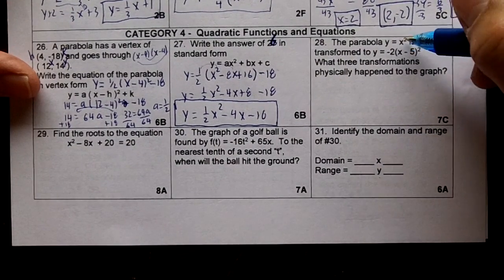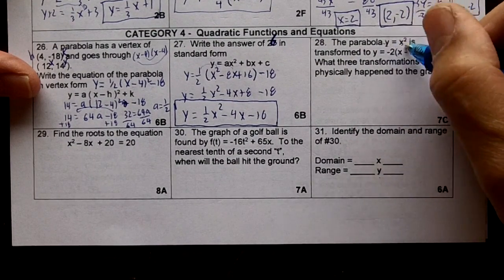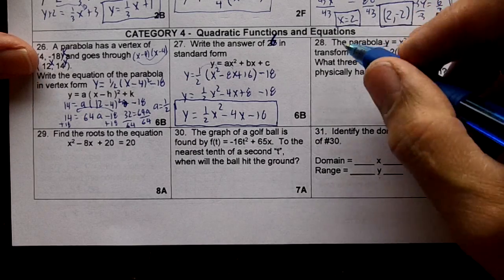Number 28, the parabola y equals x squared, that's standard, or this is the parent function, is transformed to this.